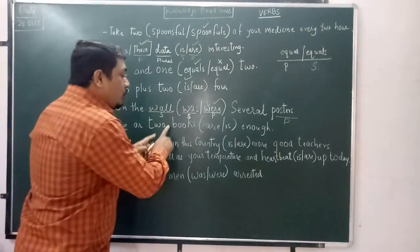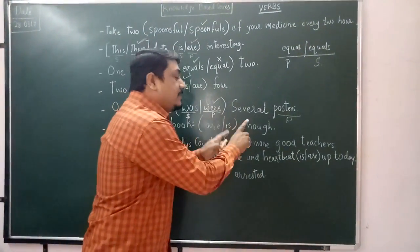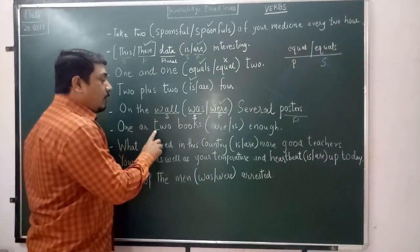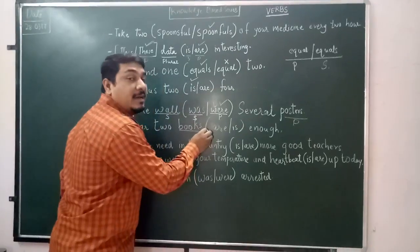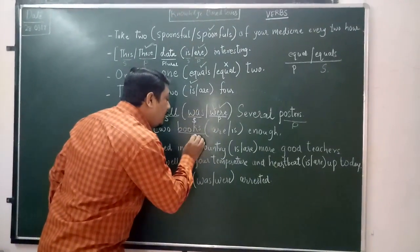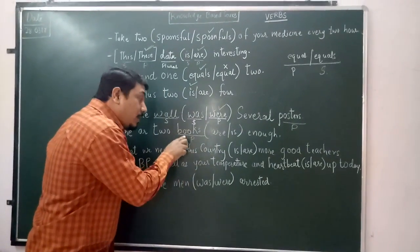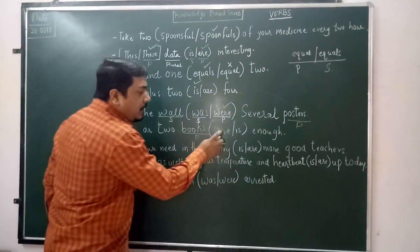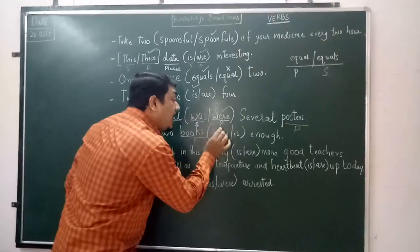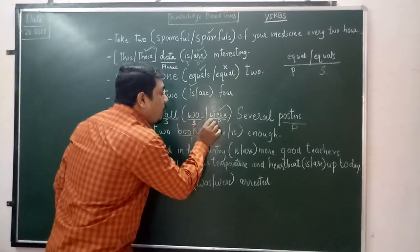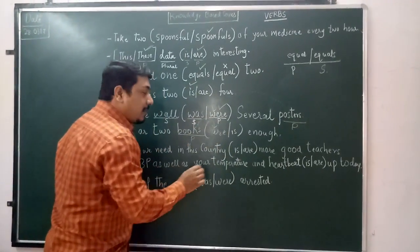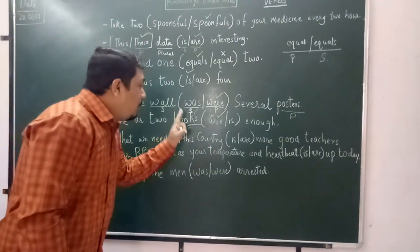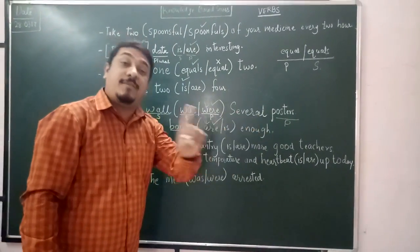'One or two books are / is enough.' Look carefully: 'books' is obviously plural. With plural words, a plural verb is used. Between 'are' and 'is', the plural one is 'are'. So the right answer is 'one or two books are enough', not 'is'.